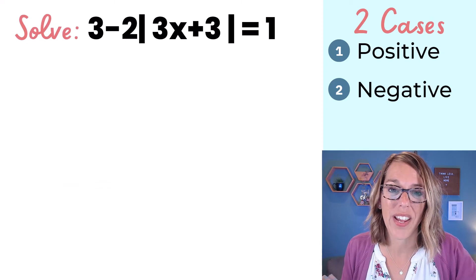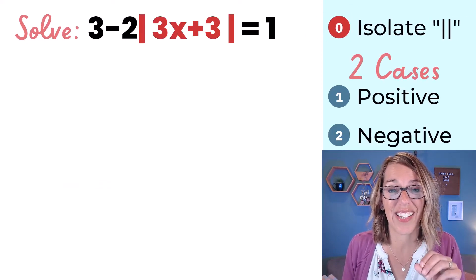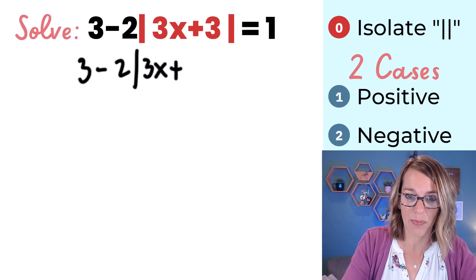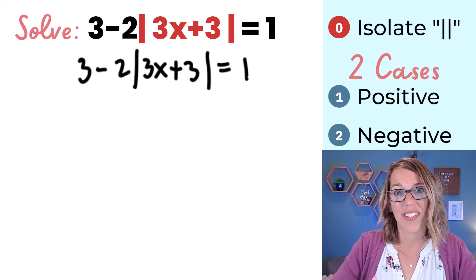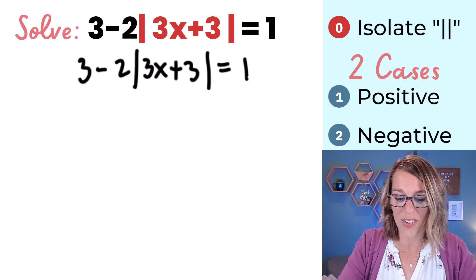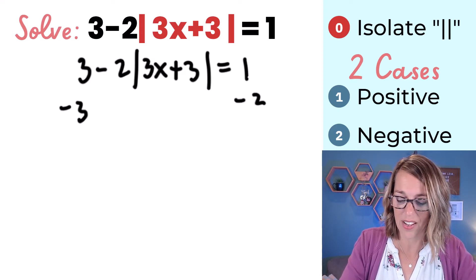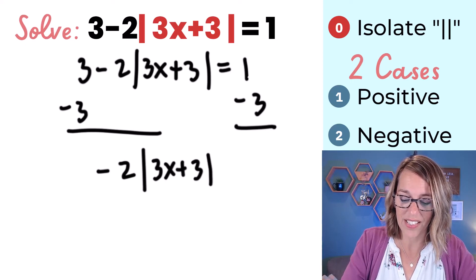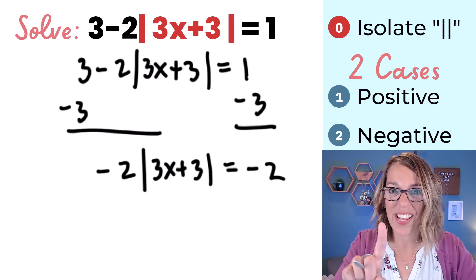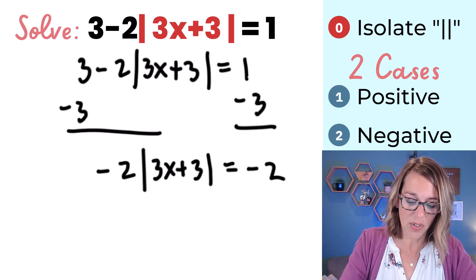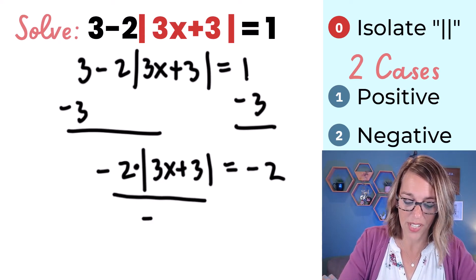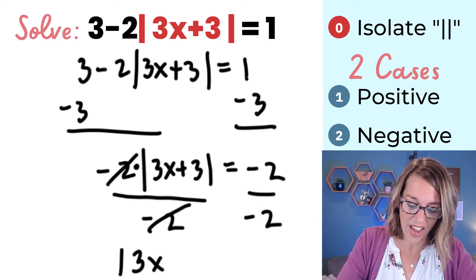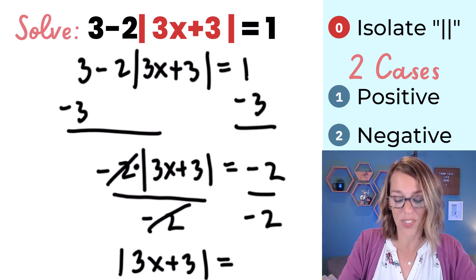This next one has a lot going on. Before applying the two cases, I first need to isolate the absolute value. I have 3 minus 2 times the absolute value of 3x plus 3 equals 1. I subtract 3 from both sides to get negative 2 times the absolute value of 3x plus 3 equals negative 2. Then I divide both sides by negative 2.